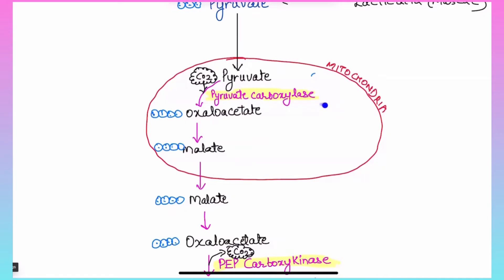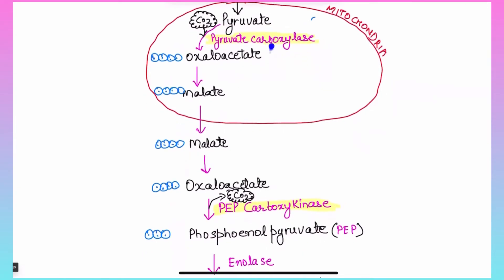The enzyme pyruvate carboxylase converts pyruvate, a three-carbon molecule, to oxaloacetate, a four-carbon molecule — adding a CO₂ in the process. Next, oxaloacetate converts to malate, because the cell has no transporters to move oxaloacetate directly across the mitochondrial membrane. Malate exits the membrane and converts back to oxaloacetate in the cytosol. The whole purpose is to get oxaloacetate out of the mitochondria, and this is catalyzed by malate dehydrogenase.